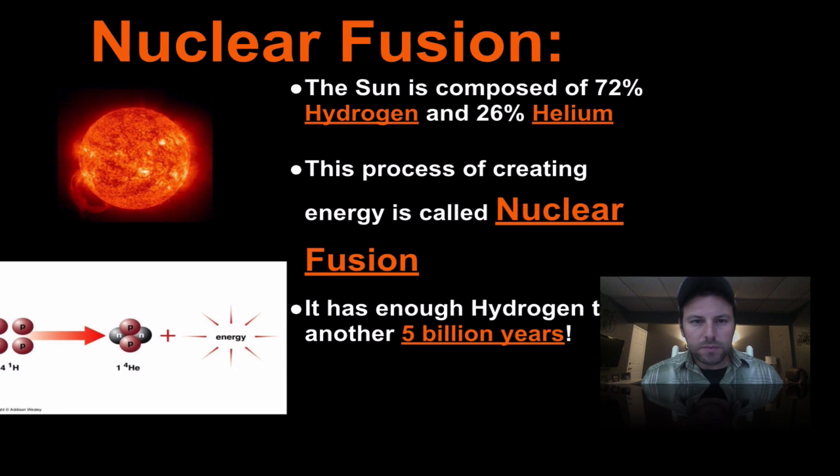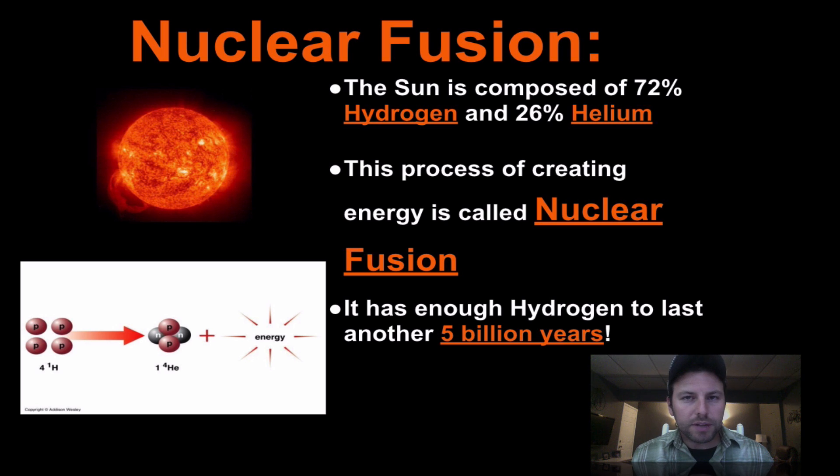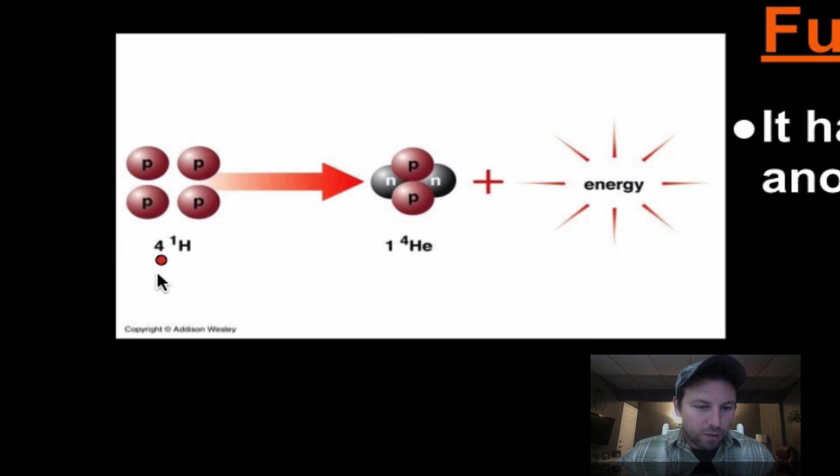I've mentioned this term nuclear fusion a couple of times. It is probably singly the most important part of stars that we need to know. Our sun, composed of mostly hydrogen and some helium, is what is undergoing nuclear fusion in that core. The process of creating energy in stars is known as nuclear fusion, and it's basically taking hydrogen atoms, forcing them together, producing a helium and some energy. The sun has been going now for about five billion years and has enough hydrogen to last another five billion years.